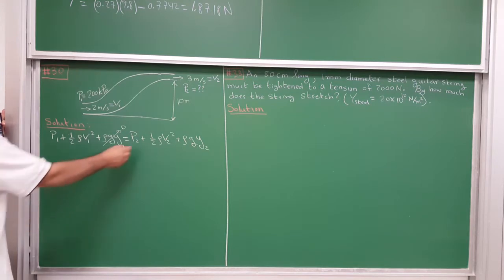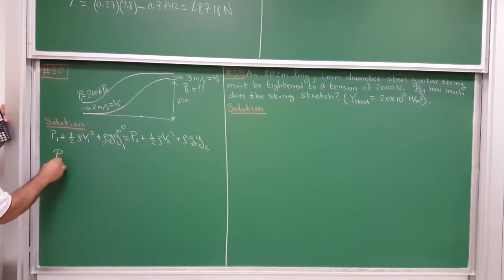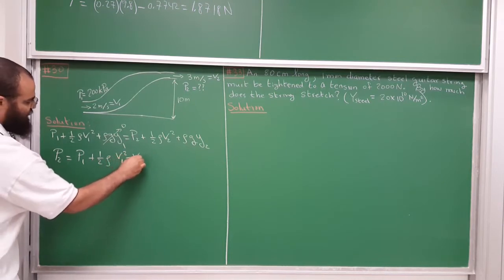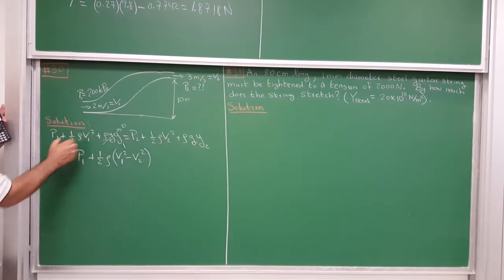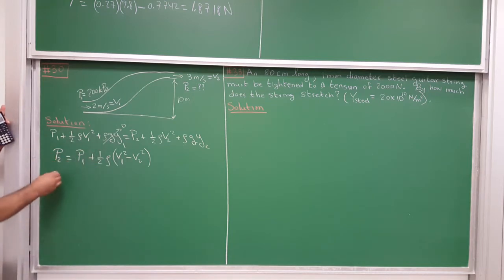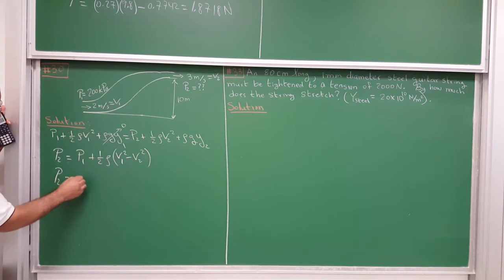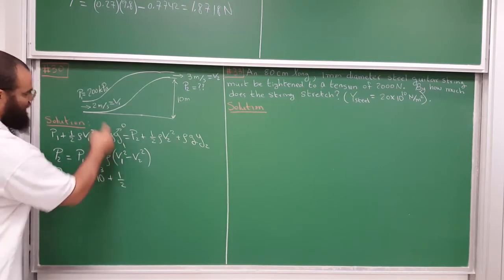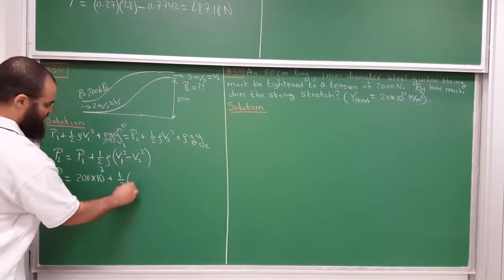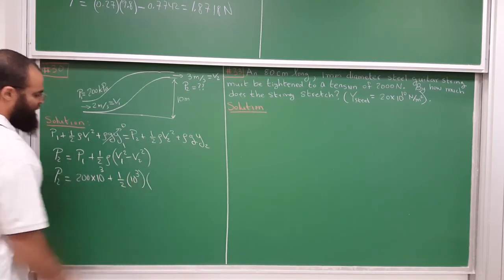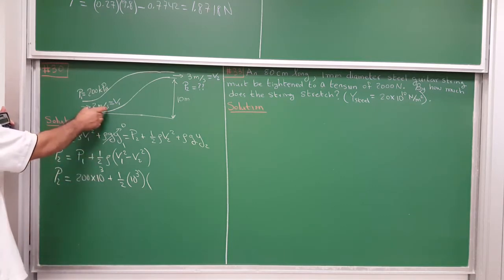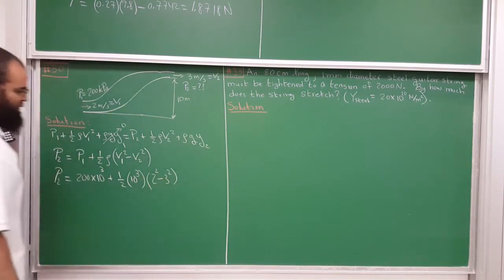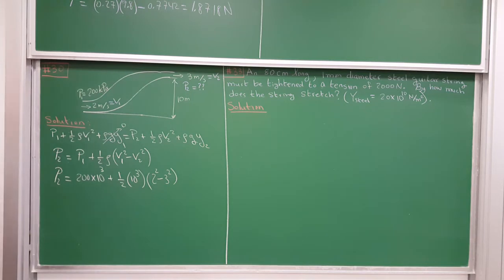Rearranging to solve for P₂: P₂ = P₁ + ½ρ(v₁² - v₂²) − ρgy₂. Substituting: P₁ = 200 kPa = 200 × 10³ Pa, fluid density is 10³ (water), v₁ = 2 m/s and v₂ = 3 m/s, so v₁² − v₂² = 4 − 9 = −5. The pressure upstairs will be less.